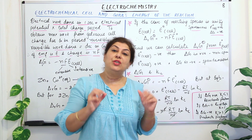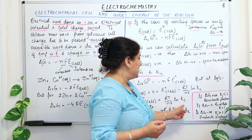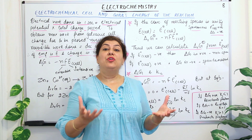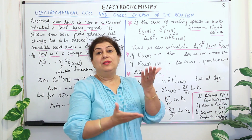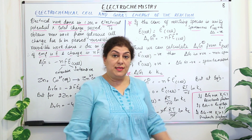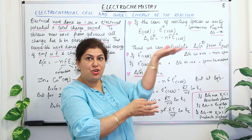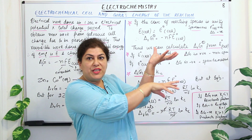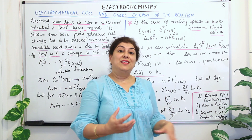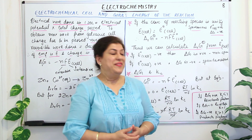If delta G is equal to zero, then Kc equals 1, meaning the reaction is at equilibrium. If the value of delta G is negative, the process is spontaneous, the concentration of products is very high, and since products are in the numerator, Kc is greater than 1 — products predominate.